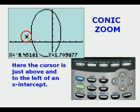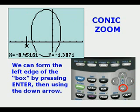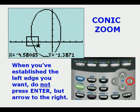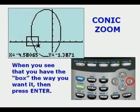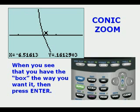We can form the left edge of the box by pressing Enter, then using the down arrow. And when we establish the left edge we want, we do not press Enter, but arrow to the right. When you see that you have the box the way you want it, then you press Enter, and this is what you get.